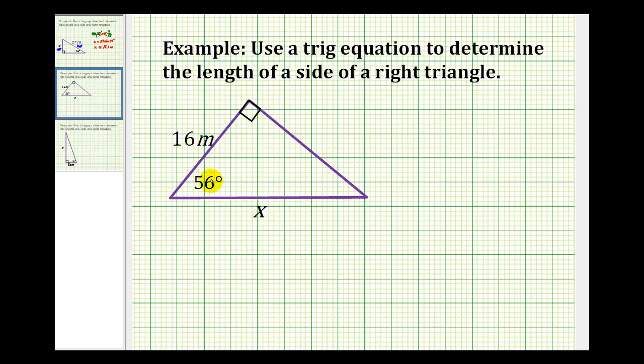Here's our second example. If we use this angle that measures 56 degrees, this would be the opposite side, this would be the hypotenuse, and this would be the adjacent side.